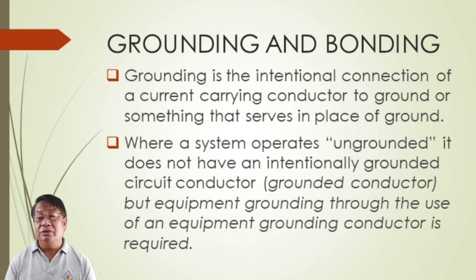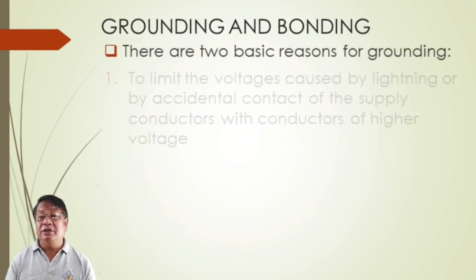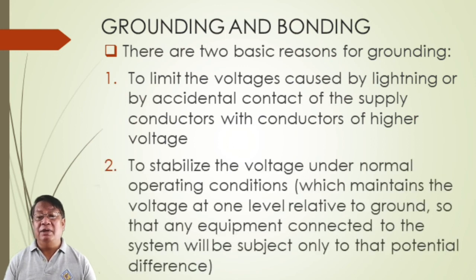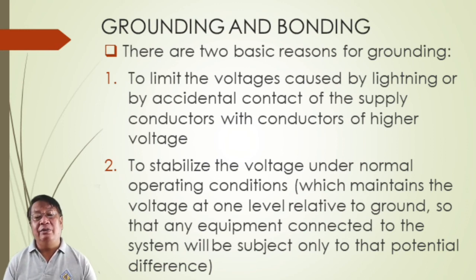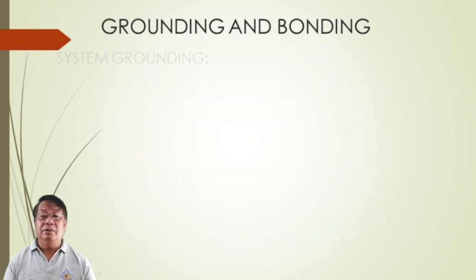Grounding is the intentional connection of a current-carrying conductor to ground. There are two basic reasons for grounding: first, to limit the voltage caused by lightning or accidental contact; second, to stabilize the voltage under normal operating conditions. Without grounding, there will be abnormal surges of current in the system.